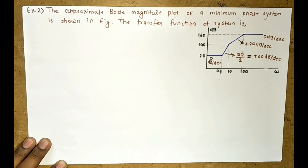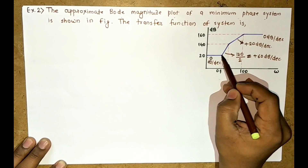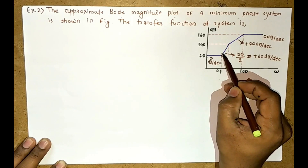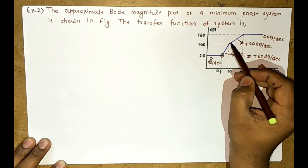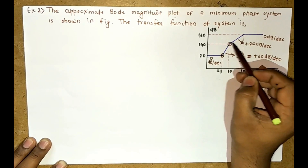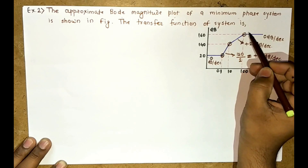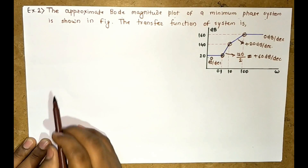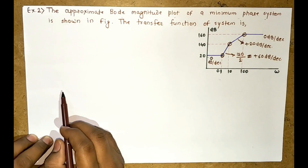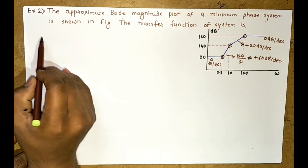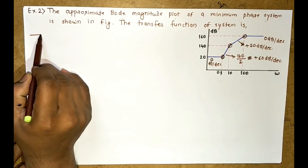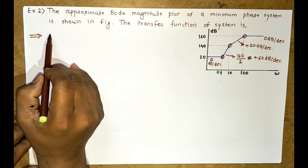So the corner frequencies are 0.1, 10, and 100 radian per second. The slopes are changing at each of these corner frequencies, so first let us note down the corner frequencies.